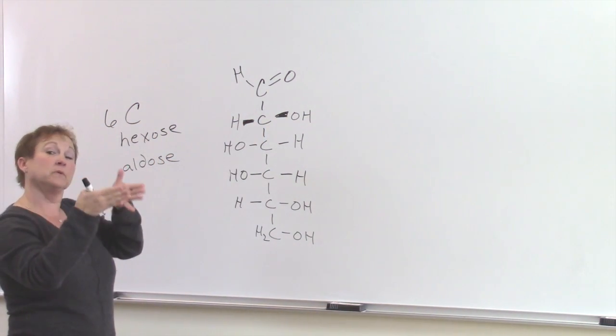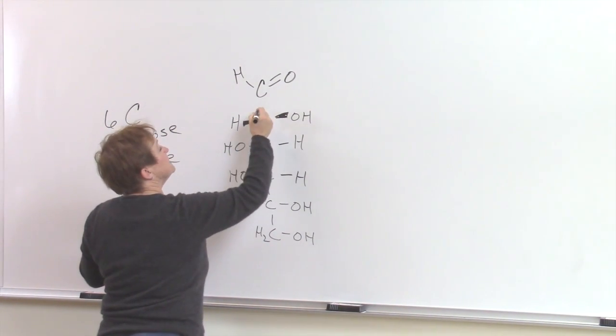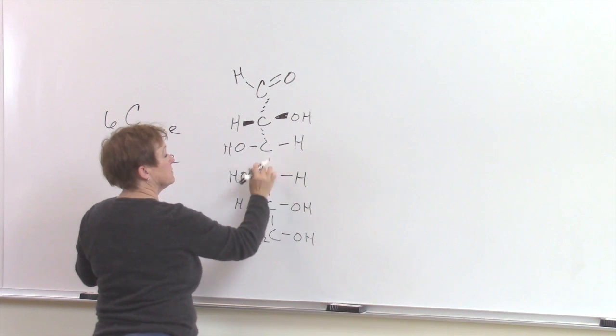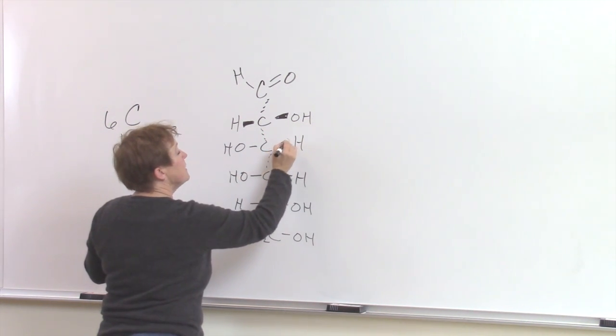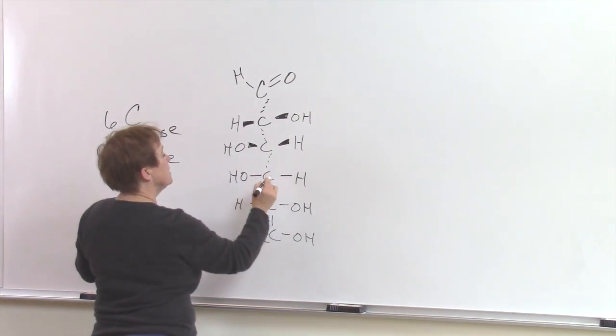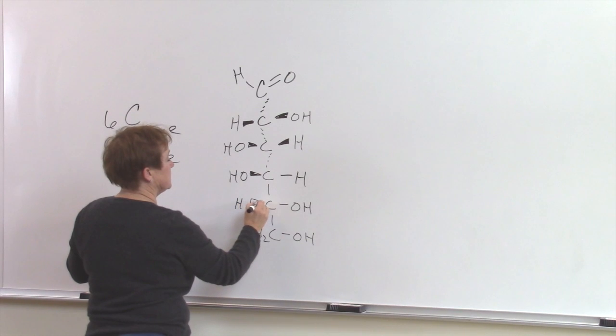The Fisher projection means that things that are on the left and right are coming out of the plane of the board. The bonds that are vertical are going back into the plane of the board. If you remember, each of these carbons has four bonds so it's tetrahedral.